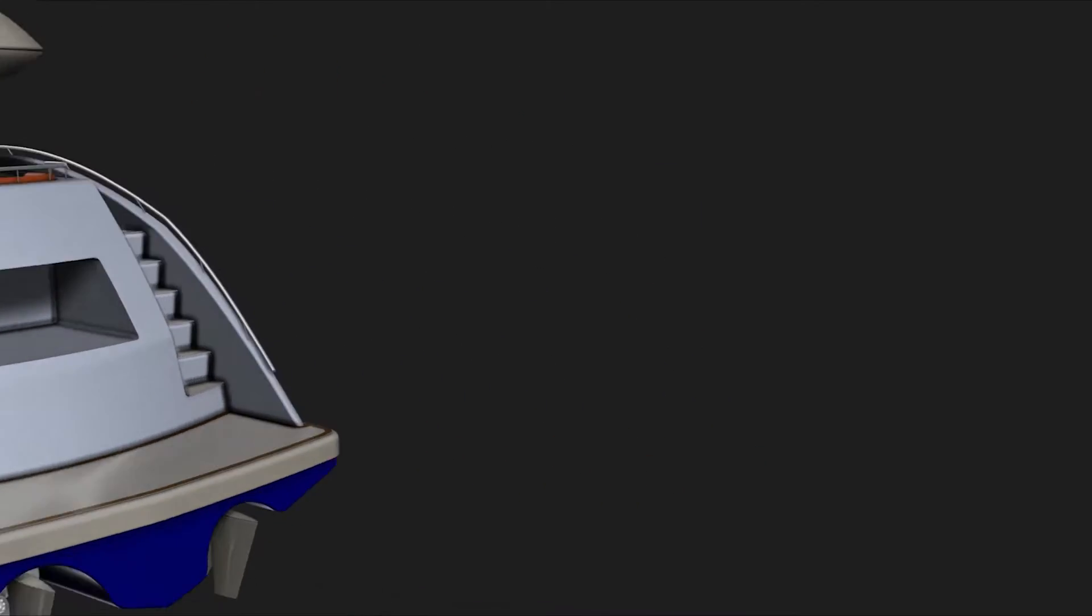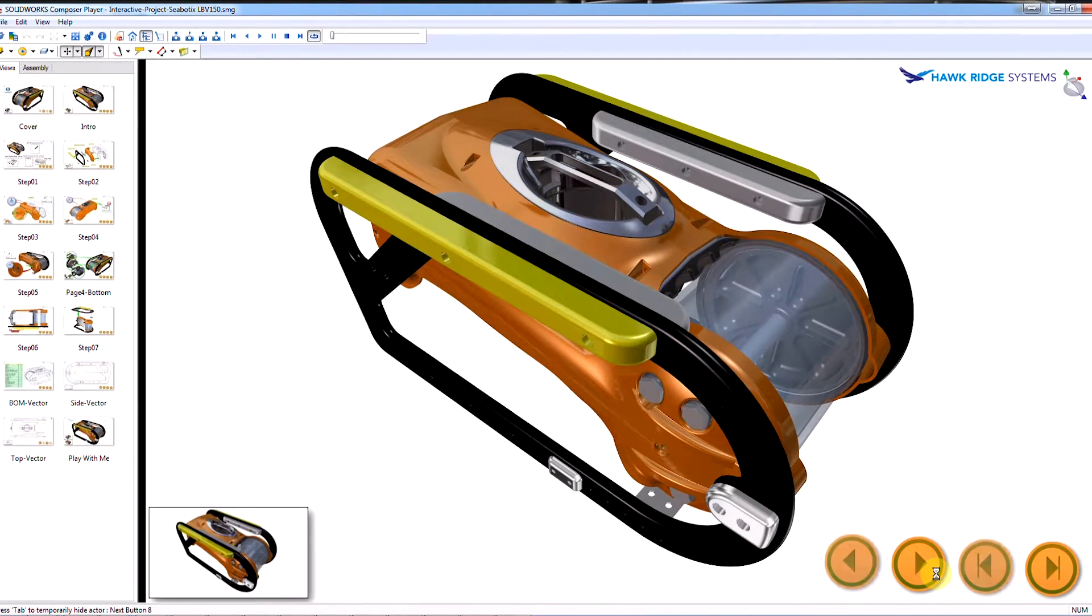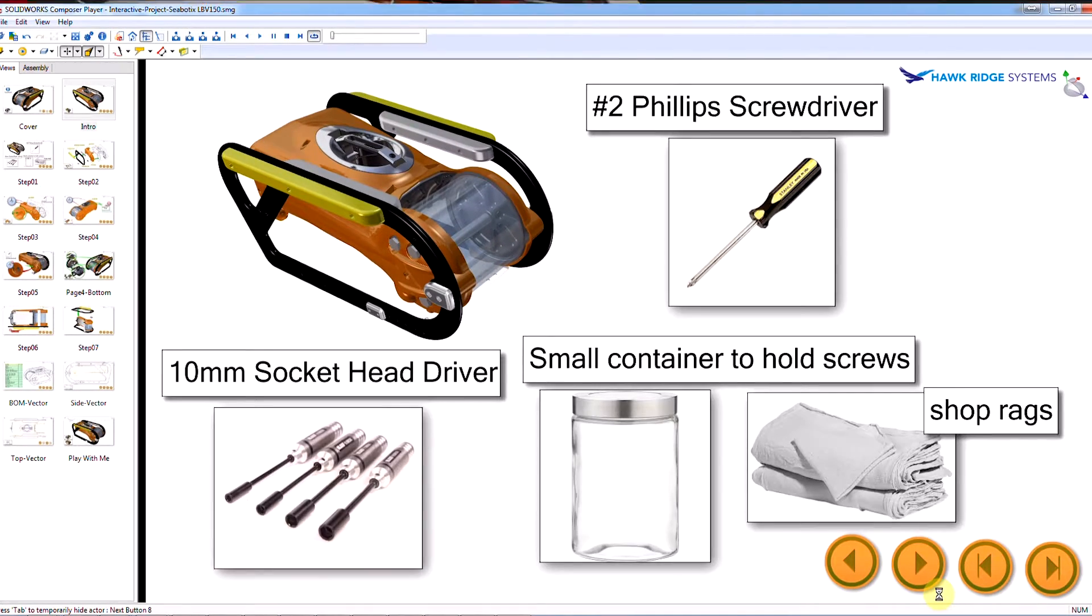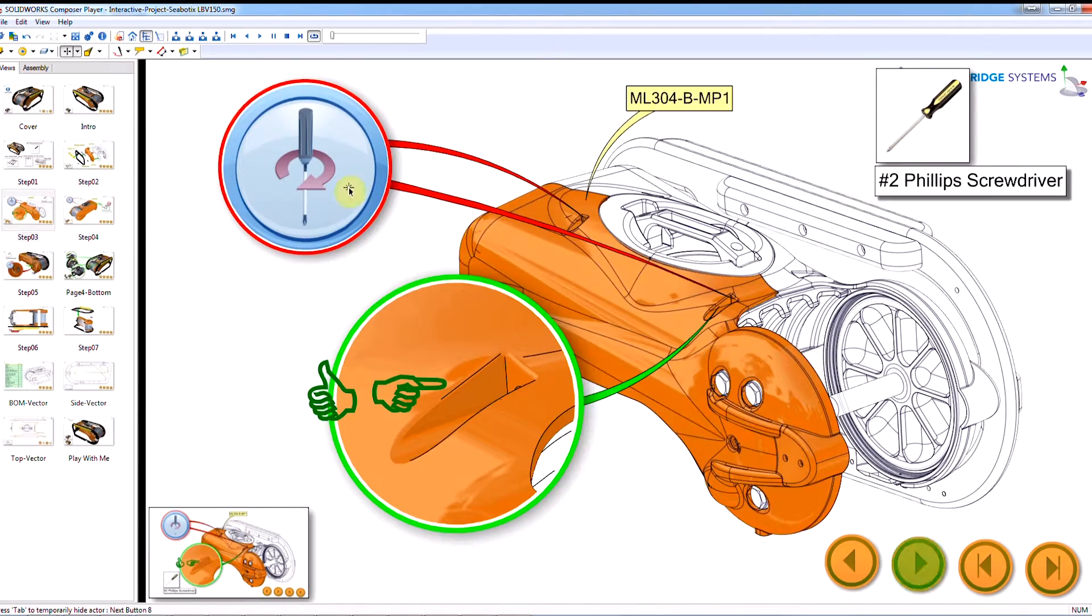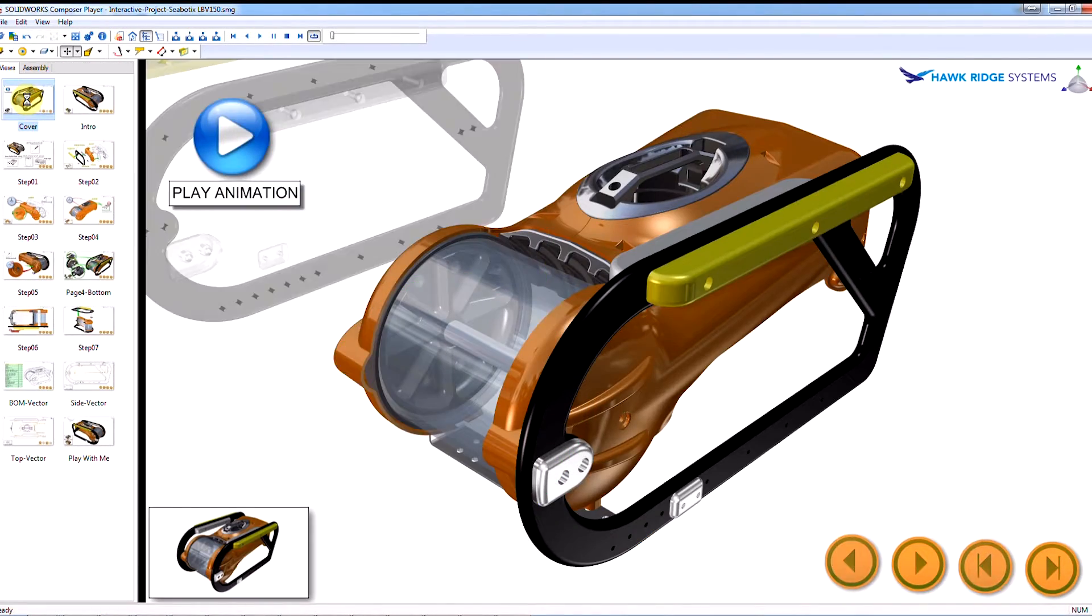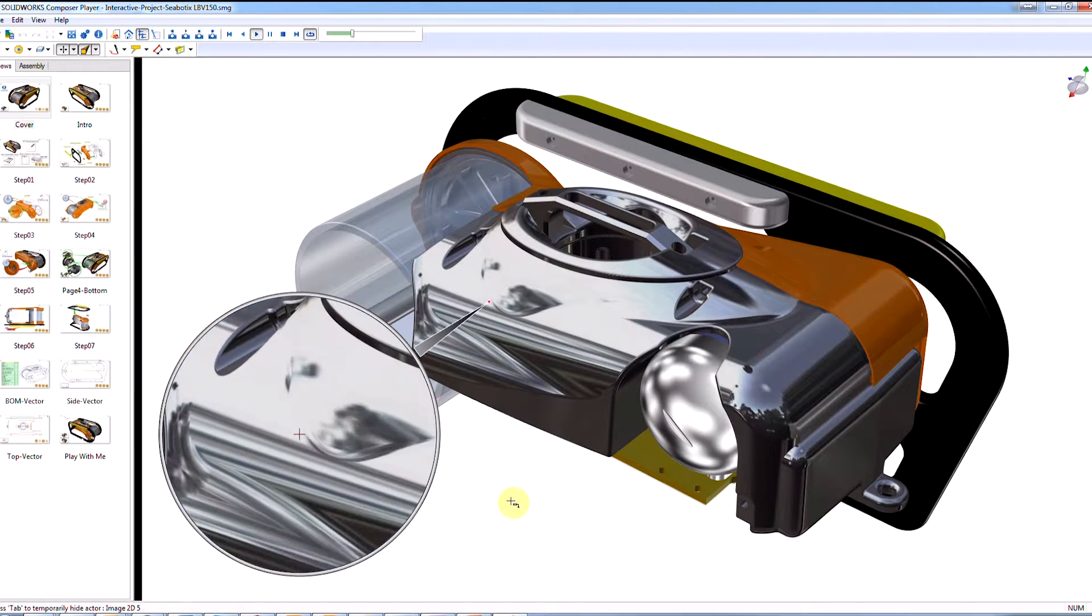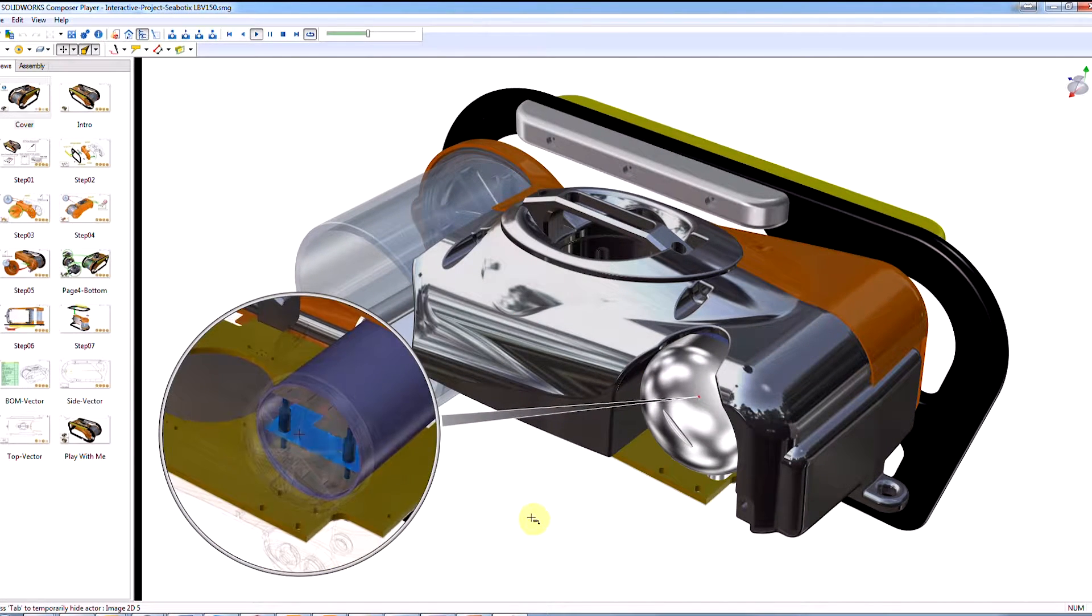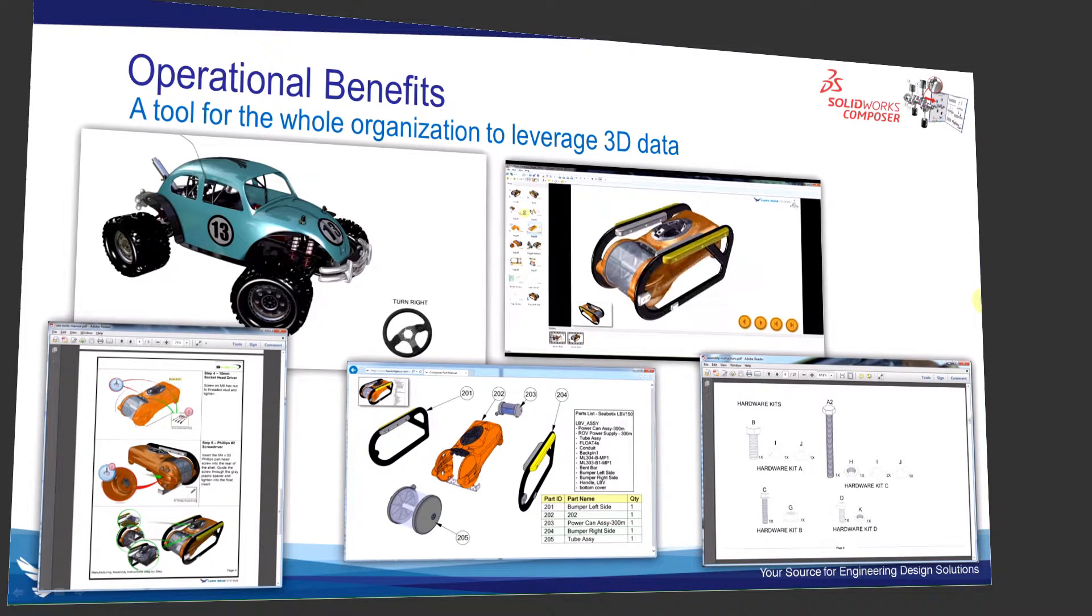Composer is also capable of a few different interactive 3D publications. One is the previously mentioned interactive vector SVG parts list. Another is the free Composer player, which plays all content in an interactive environment. This can be exported as a self-executable format, which can play on any PC and be shared with anyone in the world.